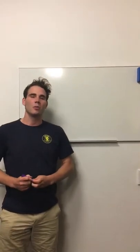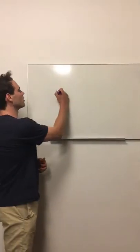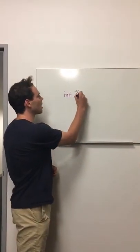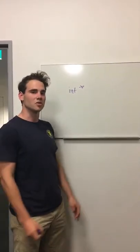A pointer is basically a variable that contains the address to another variable. So I'm going to declare a pointer. I can go int star, and the star is the key object here. So this is saying that this is a pointer to a type integer.